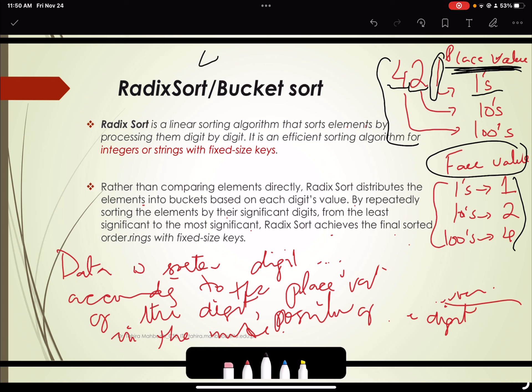So in this number 421, one is at the least significant digit and four is at the most significant digit. So we will sort based on the least significant digit. We will start from the least significant digit and move towards the most significant digit.